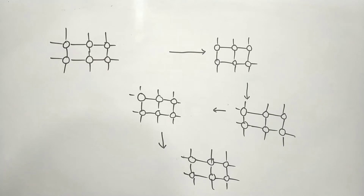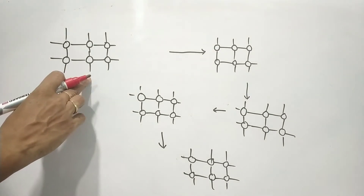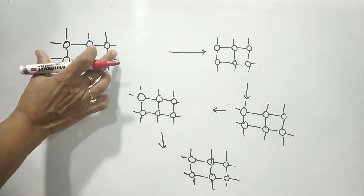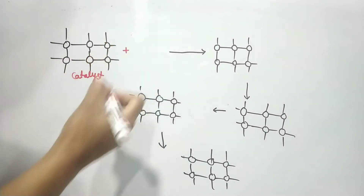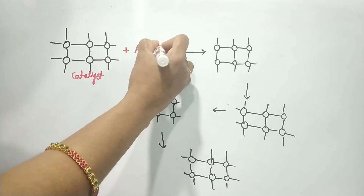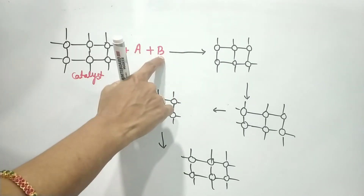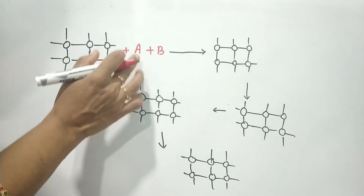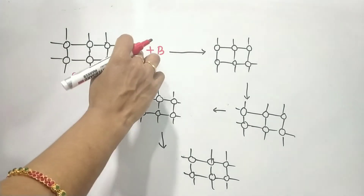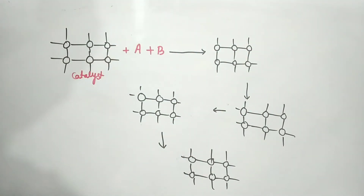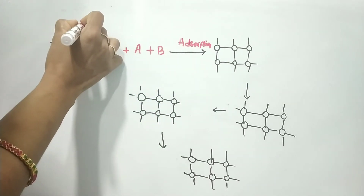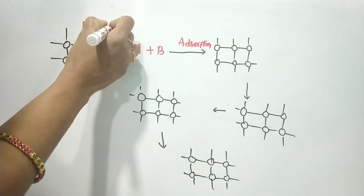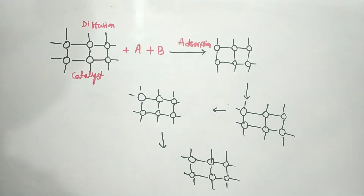Now let us look at these five steps in diagrammatic form. The first step is diffusion of the reactants to the surface of the catalyst. We have reactant A and reactant B, and they diffuse toward the catalyst surface. Diffusion is shown here, followed by adsorption of the reacting molecules.